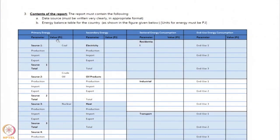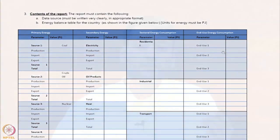The students were asked to collect data for different countries on their primary energy uses and the amount of energy that goes into secondary sources like electricity, their uses in different sectors like residential, industrial and transport, and the breakdown into different end uses like lighting, air conditioning, etc.